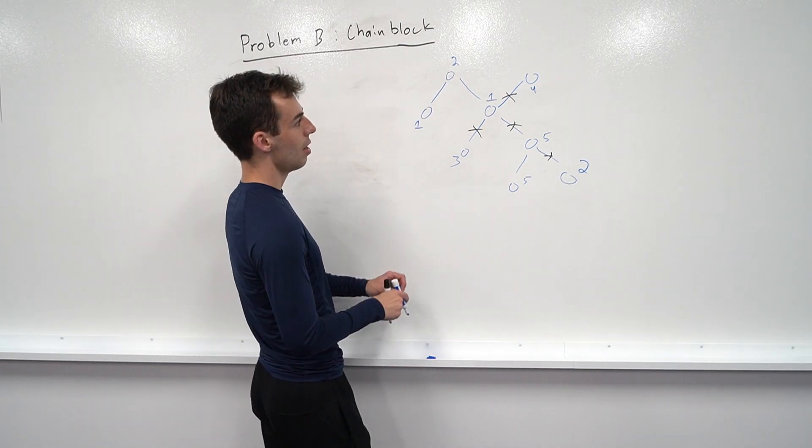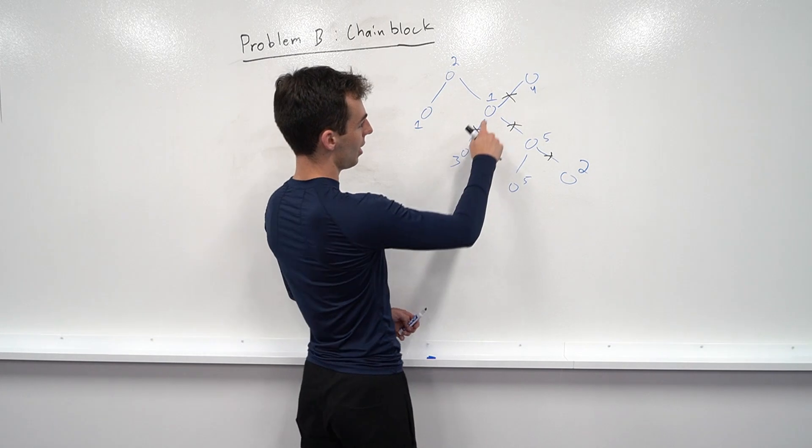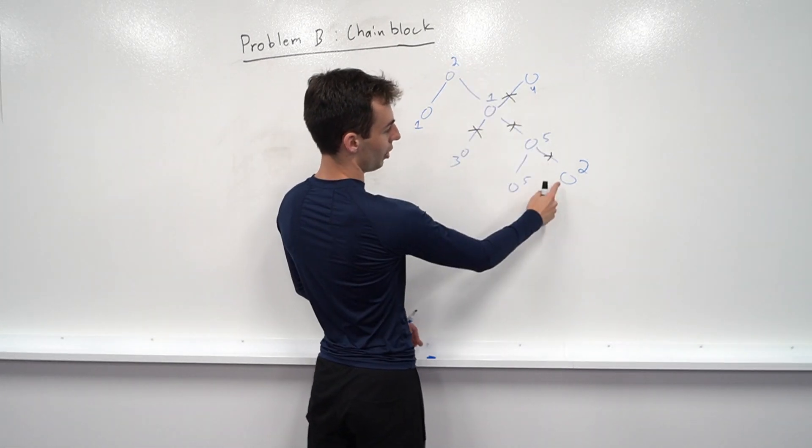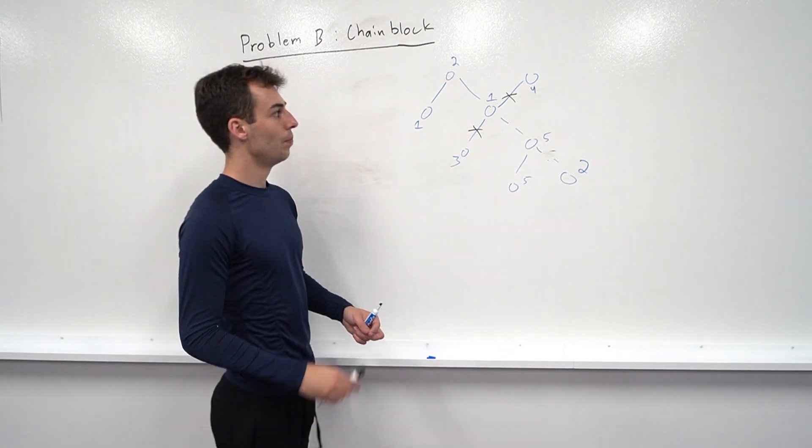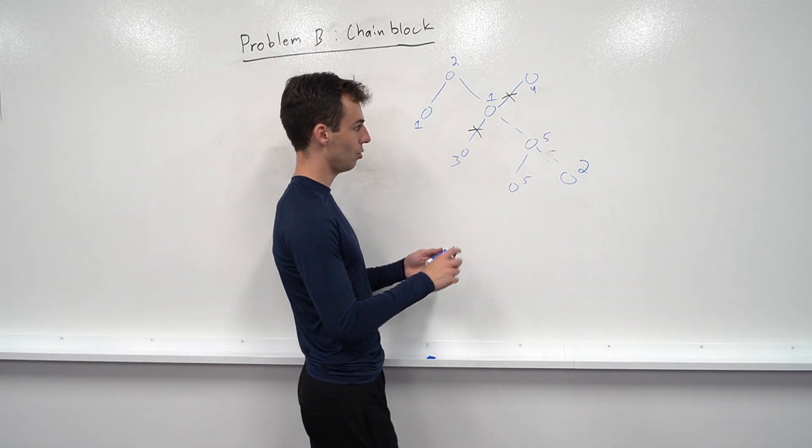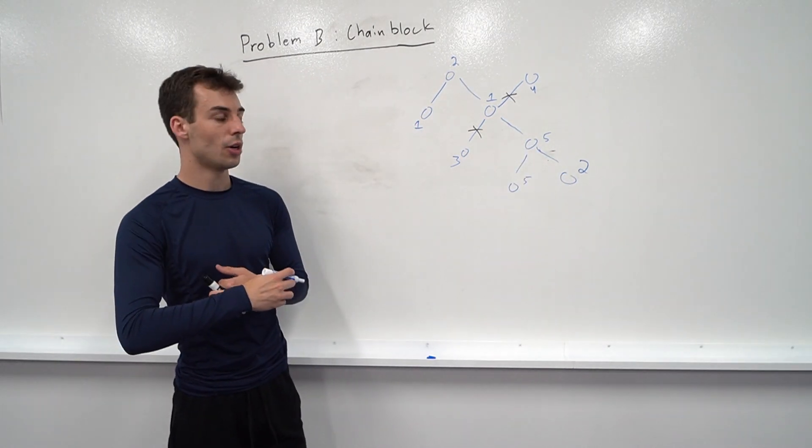So if that were the case, now not only can we not destroy any of these two edges, we also can't destroy this edge or this edge because this 2 could connect to this 2 here. So in this case, the answer would decrease from 4 all the way down to 2. We would only be able to destroy the two edges that I still have crossed out.